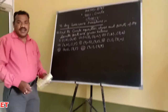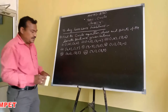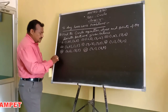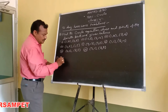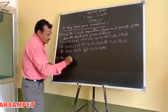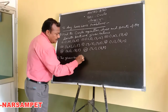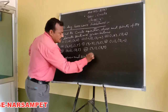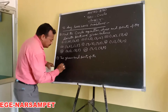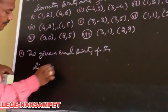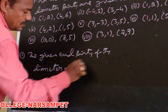Students, I am explaining once again one of the problems. Take the first one. The given endpoints of the diameter of the circle: